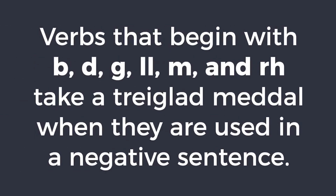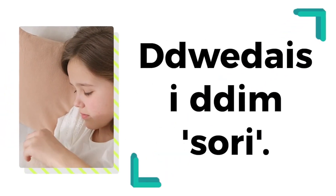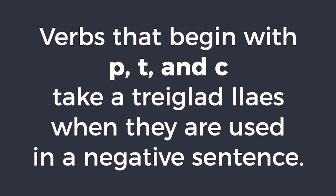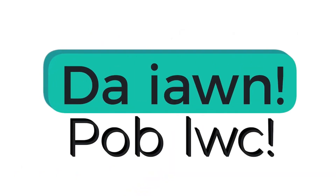Verbs that begin with B, D, G, L, M, Rh, and Ll take a treiglad meddal — soft mutation — when they are used in a negative sentence. Er enghraifft: Ddwedais i ddim. Ddwedais i ddim sori.